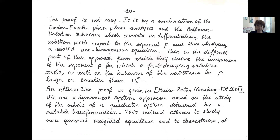The proof by Felmer and Quaas was quite involved. They used a phase plane analysis with an Emden-Fowler system, and a sophisticated tool of differentiating the solution with respect to the exponent P. An alternative proof for the same result was given recently in a paper by Liliane Maia, Gabriele Saller-Nortberg, and myself, using a dynamical system approach which made the problem very geometric and quite simple to attack. This is the aim of my presentation.